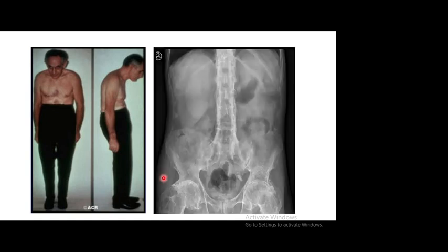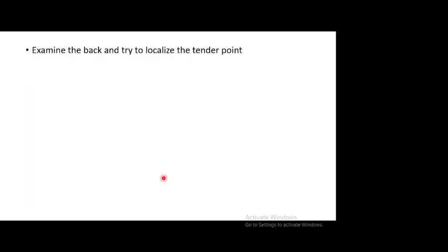The X-ray shows bilateral sacroiliitis and significant calcification of the paraspinal ligaments causing the bamboo spine appearance. The hips show very severe advanced secondary osteoarthritis — the whole joint space is equally and symmetrically lost, unlike primary osteoarthritis where only the top part is typically lost. We call this secondary osteoarthritis of the hip.